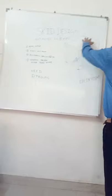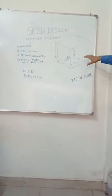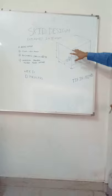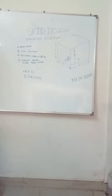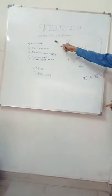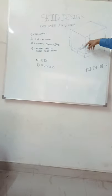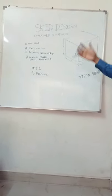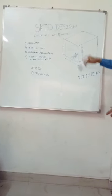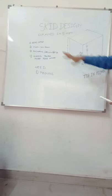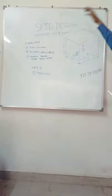We will come to certain dimensions x, y, and z. This is the space requirement for the given skid which is having a process inside. This depends on the process and the size of the process and the size of equipment inside this skid.